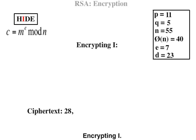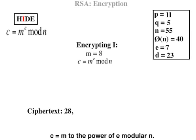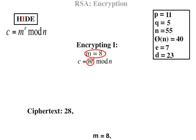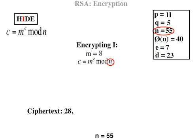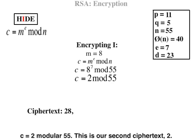Encrypting I: the numerical representation for I is 8. C equals M to the power of E modular N, where M equals 8, E equals 7, N equals 55. So C equals 8 to the power of 7 mod 55, which equals 2 mod 55. This is our second ciphertext: 2.